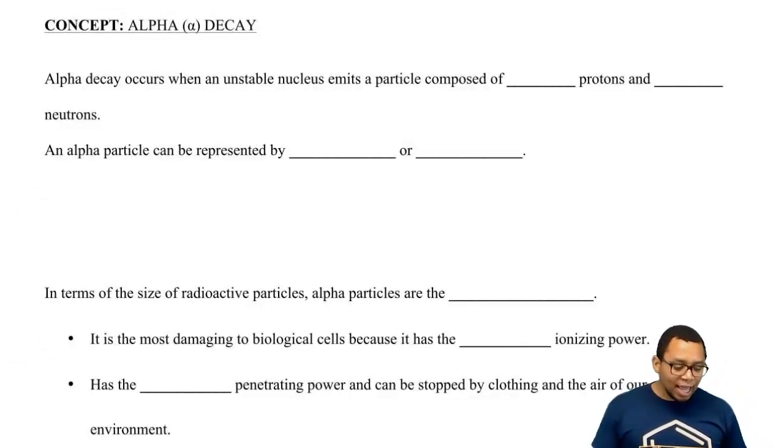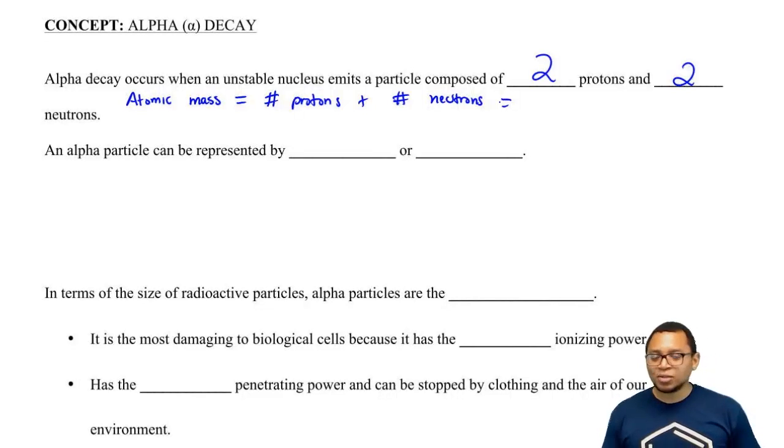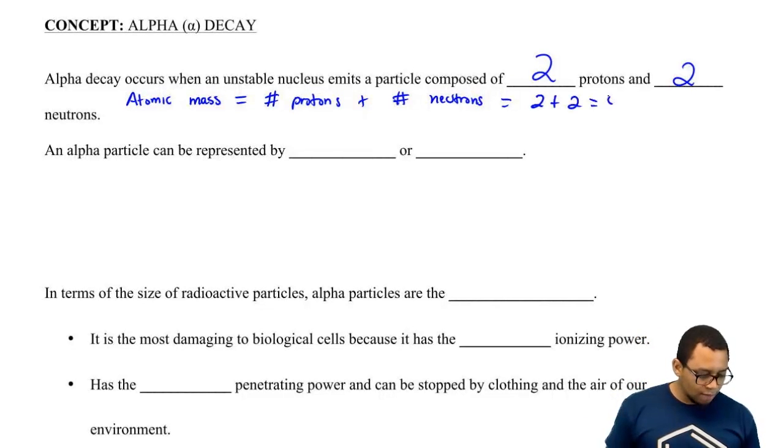Alpha decay occurs when an unstable nucleus emits a particle composed of 2 protons and 2 neutrons. Remember, atomic mass equals the number of protons plus the number of neutrons. So here, we lose 2 protons and 2 neutrons, so 2 plus 2 gives us an atomic mass of 4.